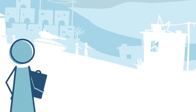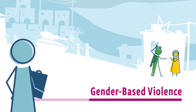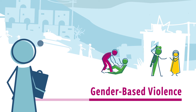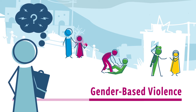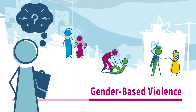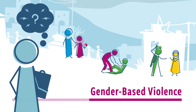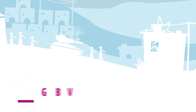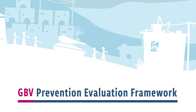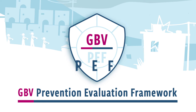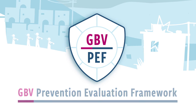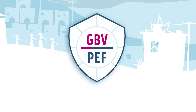Are you working to prevent gender-based violence in emergencies and frustrated with only being able to measure activities that may or may not prevent risk? The GBV Prevention Evaluation Framework is a new tool that promotes outcome-oriented methods to help you measure the prevention of GBV in humanitarian crises.